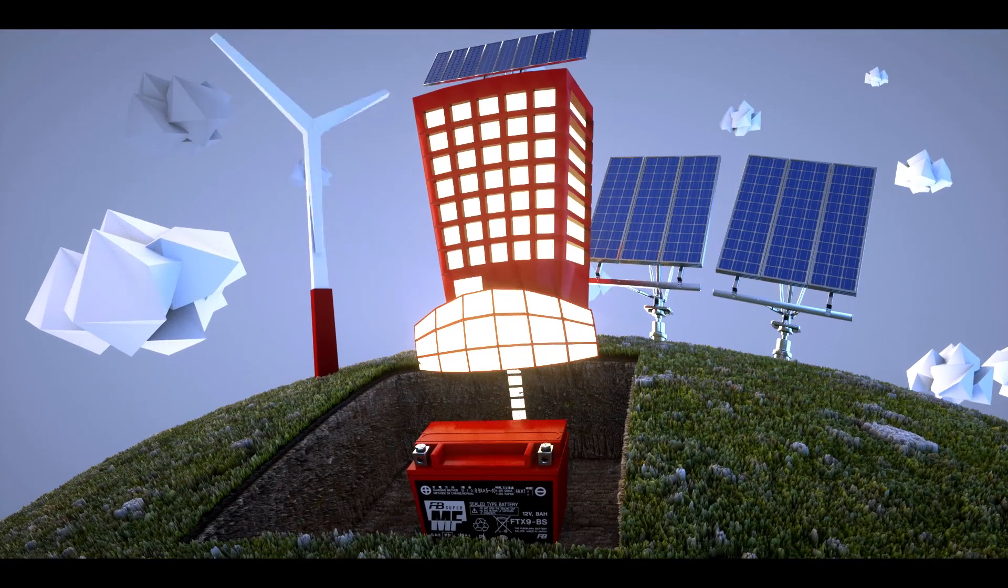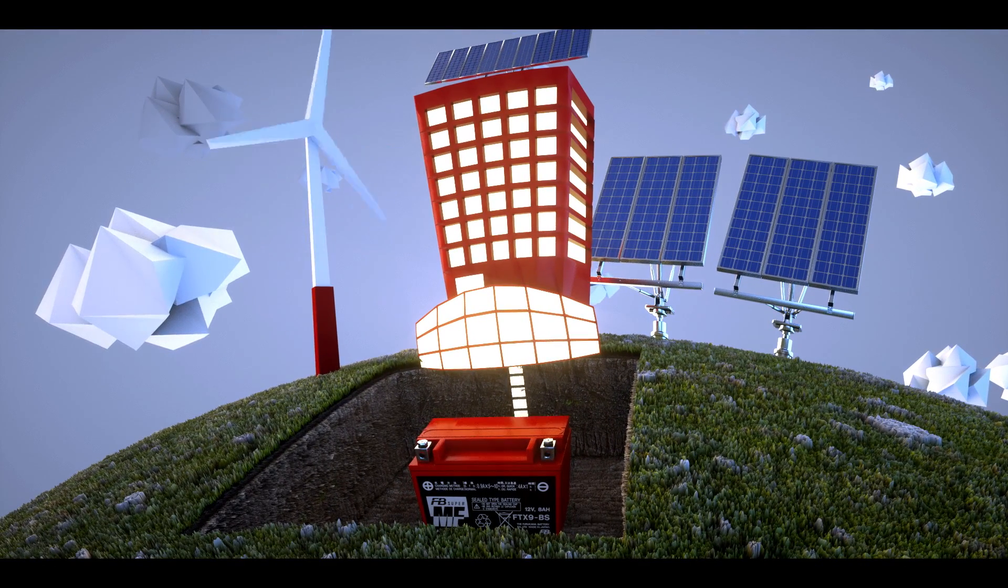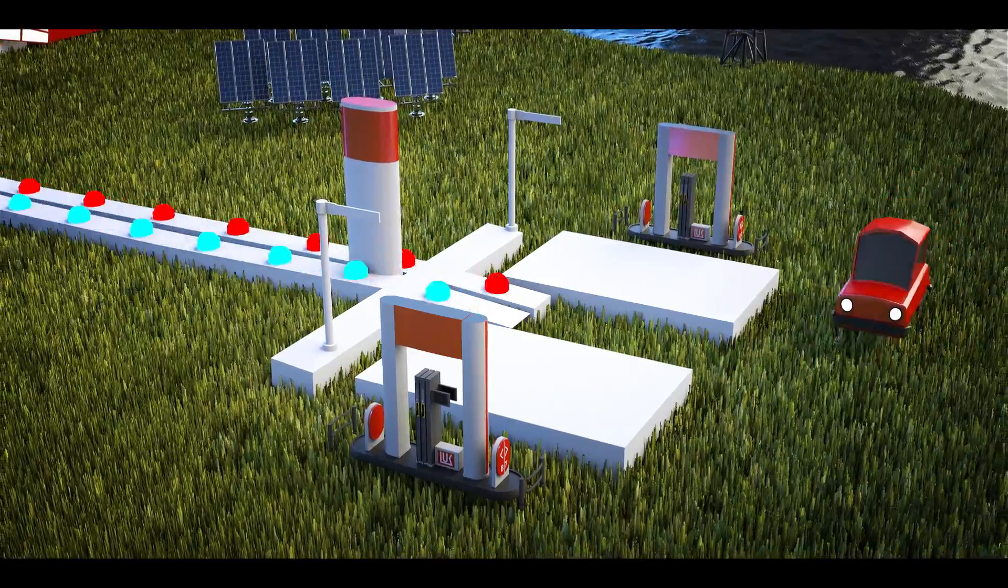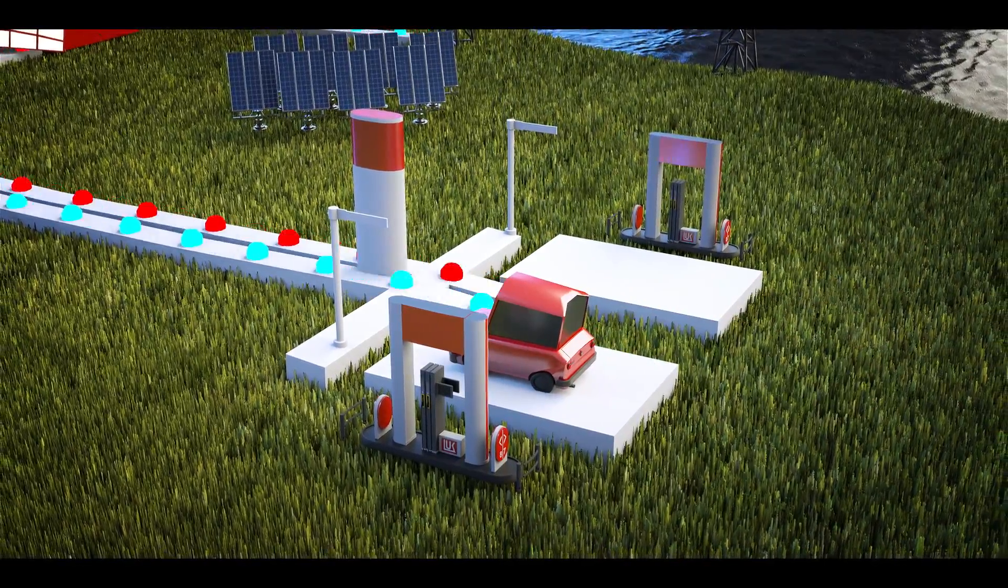Storage batteries absorb what's not needed and take over if there is not enough sun or wind. If a firm has a fleet of electric vehicles, they could store, transport and charge the energy.